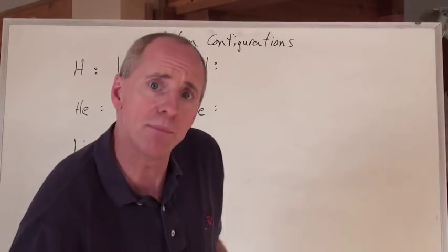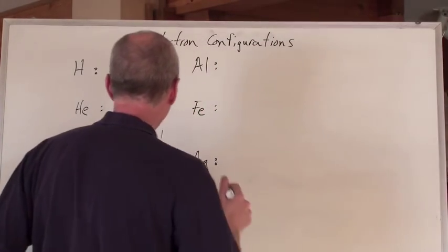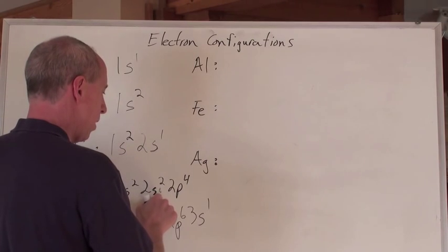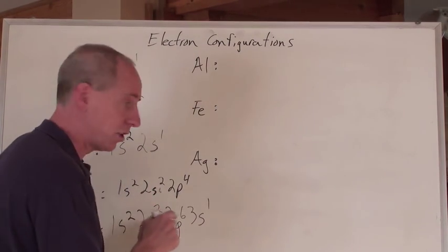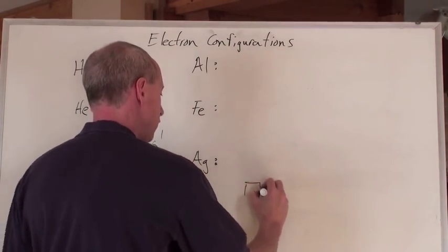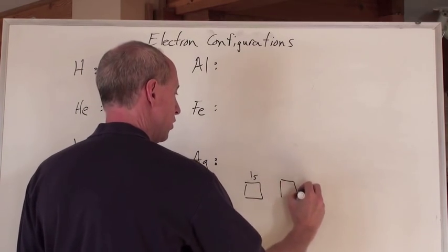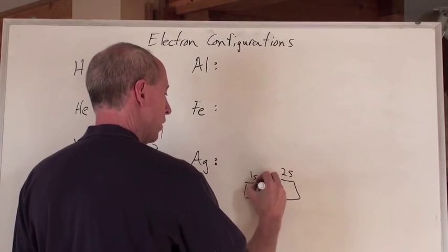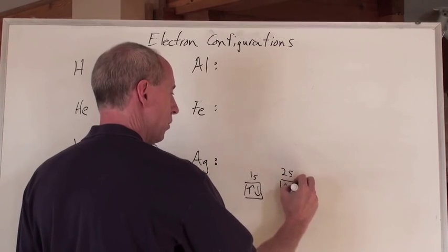Now, by the way, there's something called box diagrams. If somebody said, do the box diagram here for oxygen, well, we have the 1s orbital, the 2s orbital, where we can put one electron, two electrons, here we go.